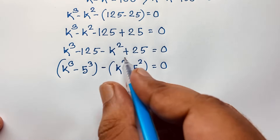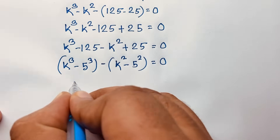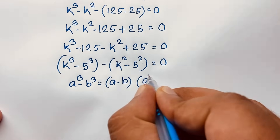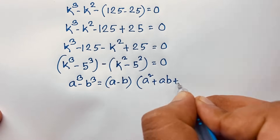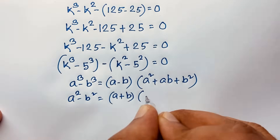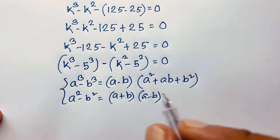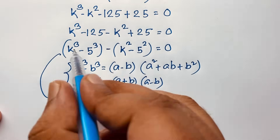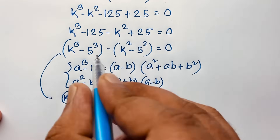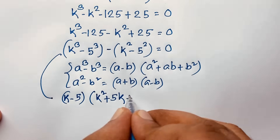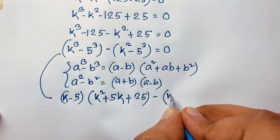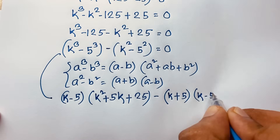I can say it will be a cubed minus b cubed, and this is a squared minus b squared. The formula for a cubed minus b cubed is (a minus b)(a squared plus ab plus b squared). And the formula for a squared minus b squared is (a plus b)(a minus b). Applying these formulas: the first expression becomes (k minus 5)(k squared plus 5k plus 25), and the second becomes (k plus 5)(k minus 5) equal to 0.